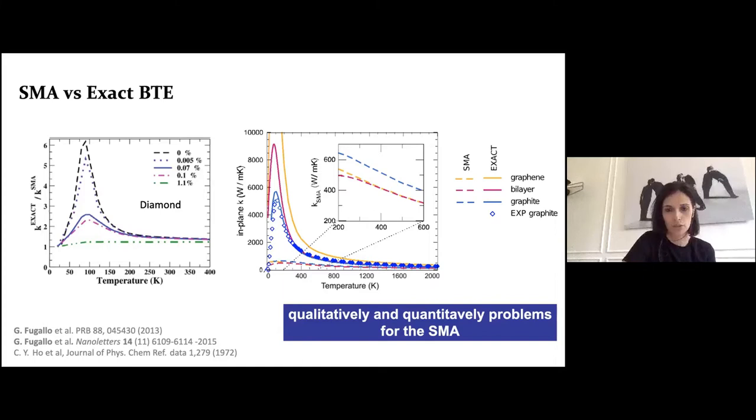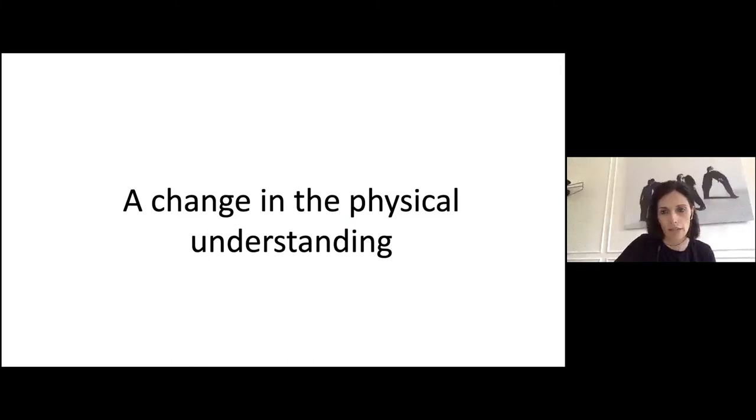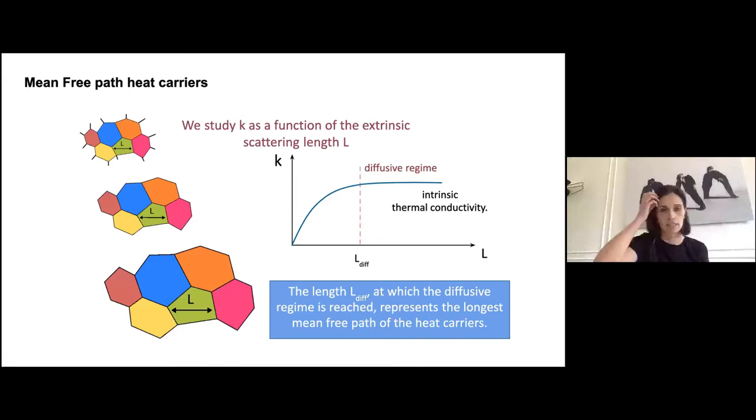However, if we reduce the dimensionality — blue is graphite, red is bilayer graphene, yellow is graphene — the SMA (dashed line) underestimates the thermal conductivity with respect to the exact solution by even an order of magnitude in the case of graphene, and at temperatures above room temperature. For systems like graphene, the single-mode standard approximation is both qualitatively and quantitatively problematic.